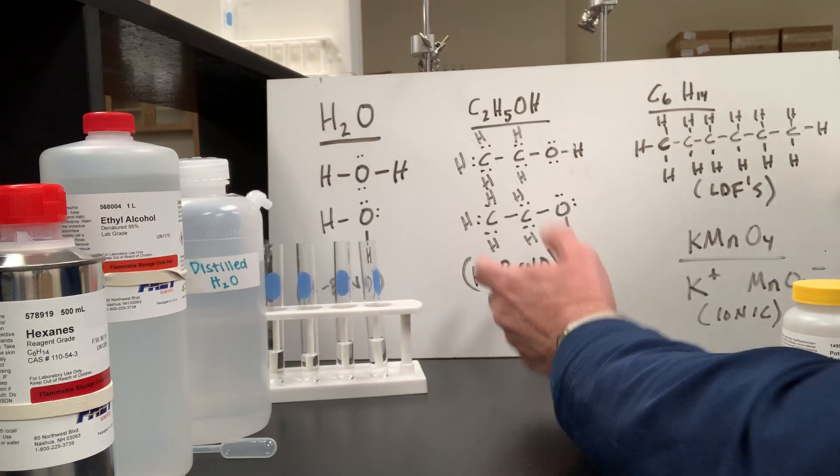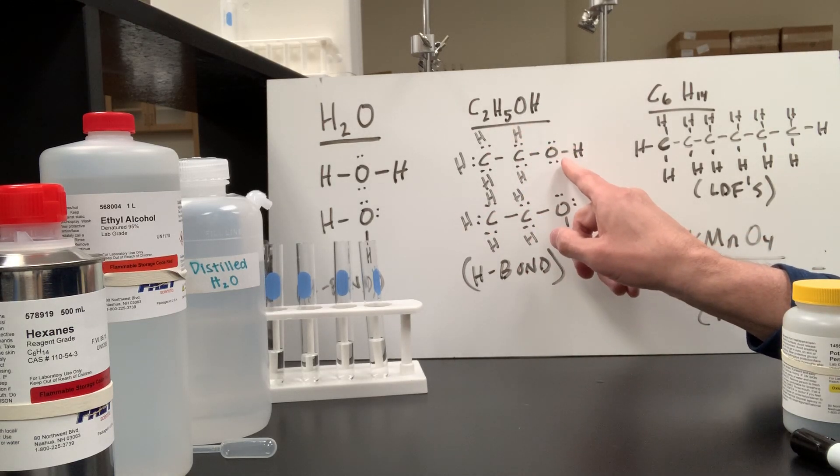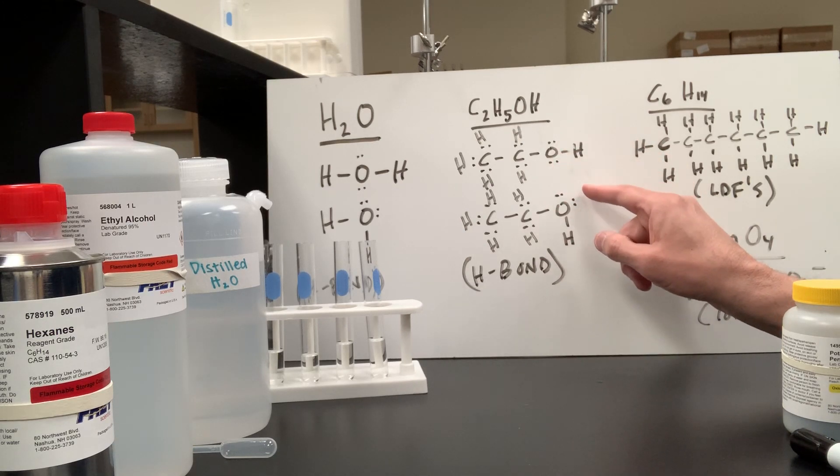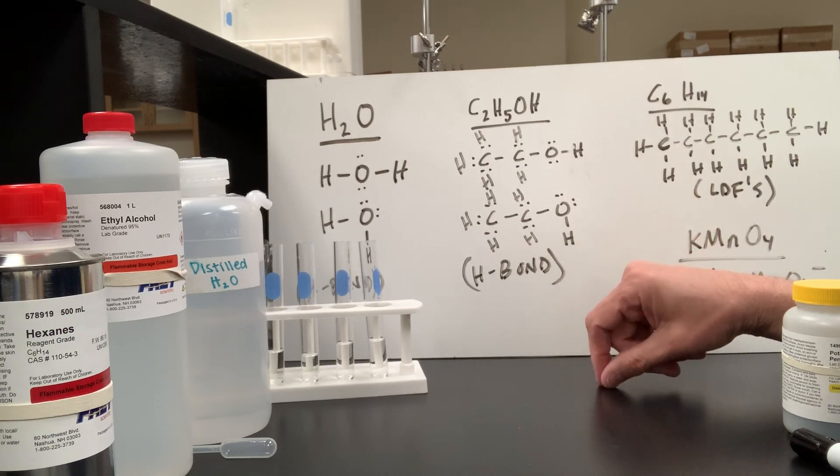Ethanol, likewise, is covalent. We have carbons bonded to hydrogens, but on this end, we have an oxygen bonded to hydrogen. That makes that molecule polar. We have a negative and a positive end, but it can also hydrogen bond because, once again, hydrogen is bonded to oxygen.